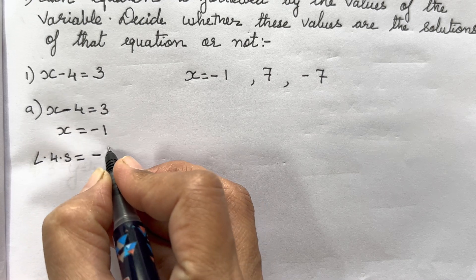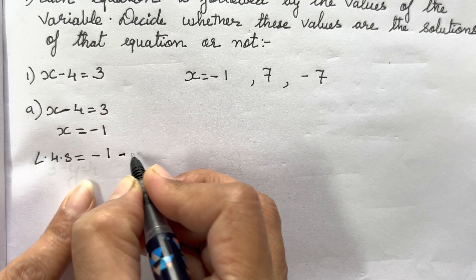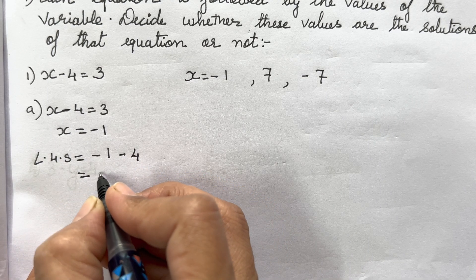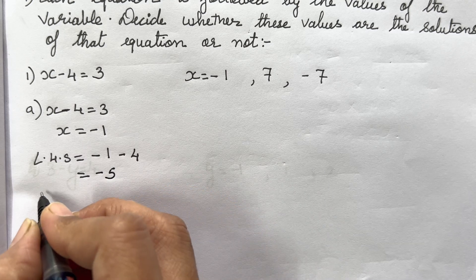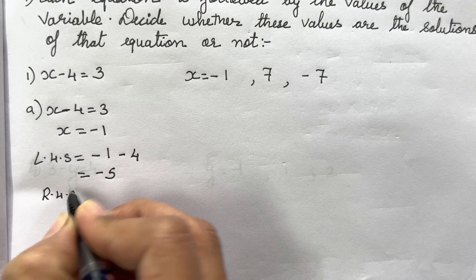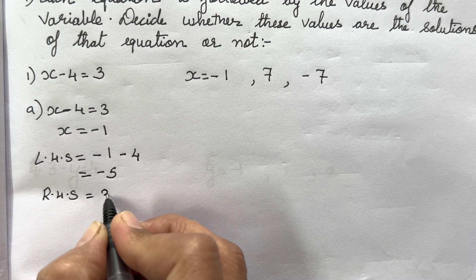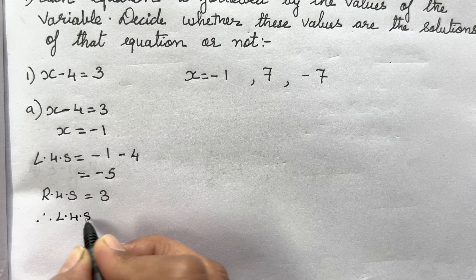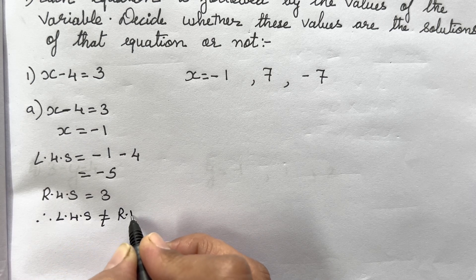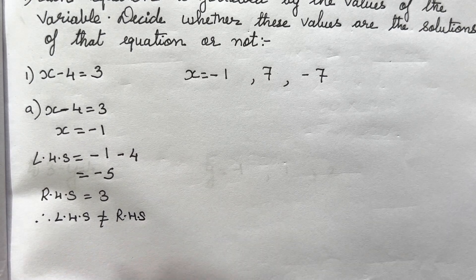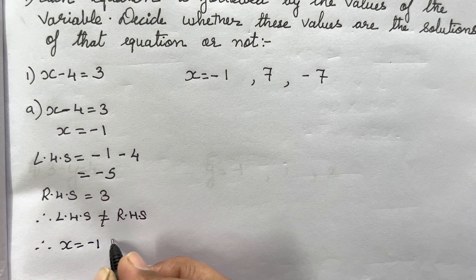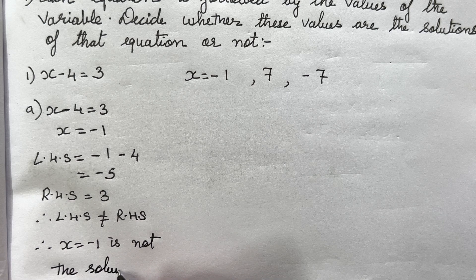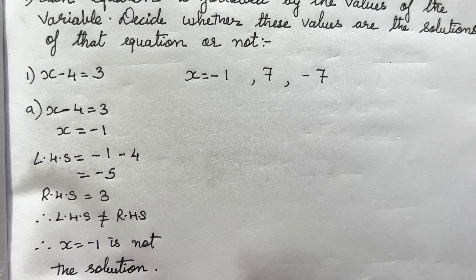The equation is x minus 4 equals 3, and x equals -1. Left Hand Side equals -1 minus 4. Since minus and minus gives plus, with the sign of the bigger number, the answer is -5. But Right Hand Side is 3. Since -5 ≠ 3, Left Hand Side is not equal to Right Hand Side, therefore x = -1 is not the solution.